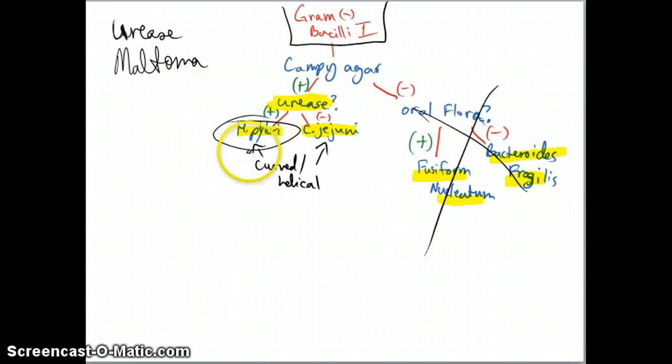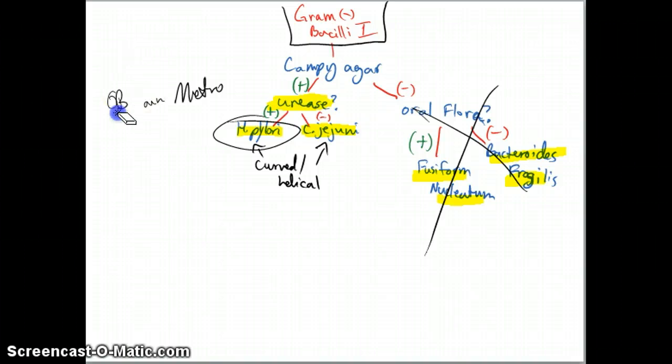H. pylori is urease producing and it can actually cause a MALToma, so that is important to remember. The drug of care for this one is you're going to have to do some combinations. You're probably going to do the ABC combination, which is amoxicillin, bismuth, and clarithromycin. Or you can do metronidazole and omeprazole for the O, and bismuth for the B. Just know there's going to be a combination of things for H. pylori. It can cause gastric ulcers, peptic ulcers, and gastritis.